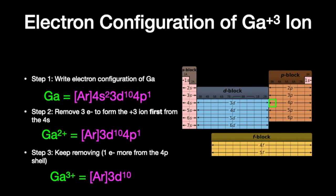The 3d10 electrons are considered core electrons, so gallium 3+ ion is considered to have zero valence electrons. This is technically not isoelectronic with argon because argon doesn't have 3d10 orbitals, but gallium 3+ is extremely stable because it has completely filled shells.